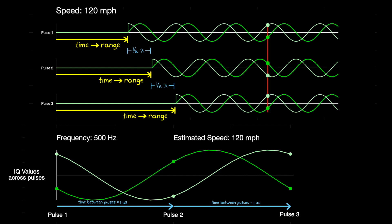So this puts the max unambiguous velocity at about 55 meters per second, or 120 miles per hour.